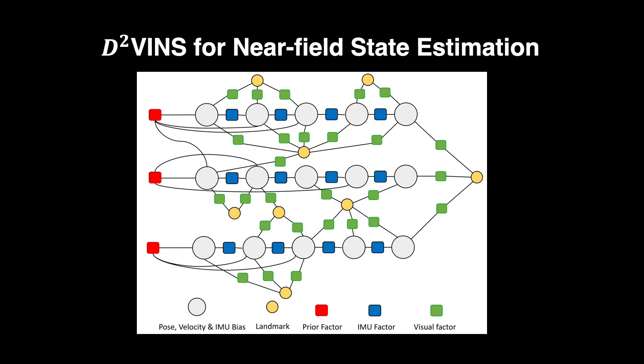In the back end, we design D-Square Visual Inertial Navigation System, D-Square VINS, for near-field state estimation. It adopts distributed optimization to solve the collaborative visual inertial odometry problem.